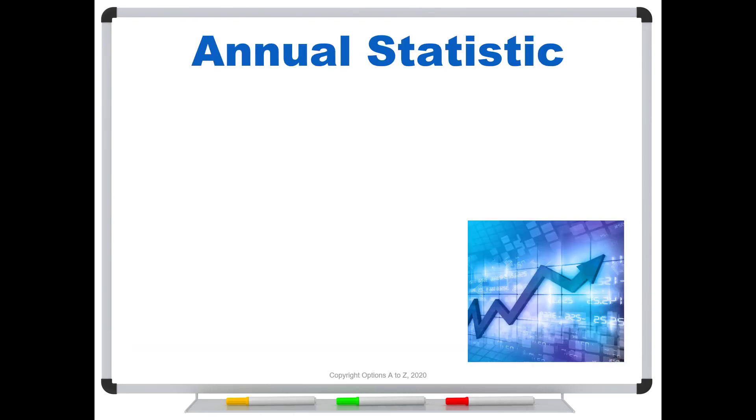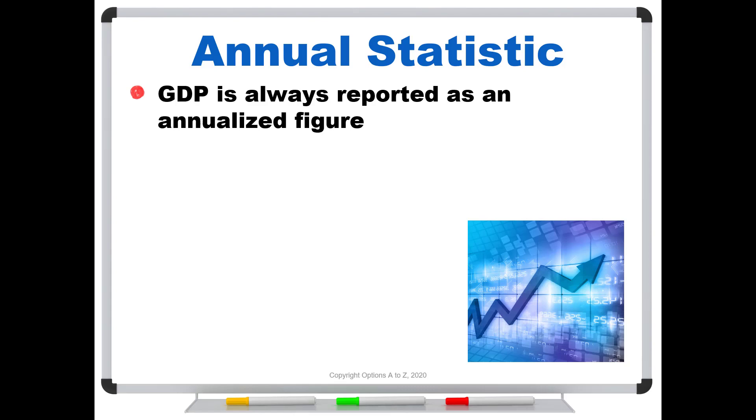The final thing to understand is that it is an annual statistic. So GDP is always reported as an annualized figure. So that just means, let's say, if we fell 1% this quarter, they would report it as 4%, meaning that if we continued at that same rate by the end of the fourth quarter, we would be down 4%. So when you see that it's minus 4.8, it doesn't mean that we fell 4.8% in that quarter. We fell by a fourth of that. It's what's called an annualized figure.